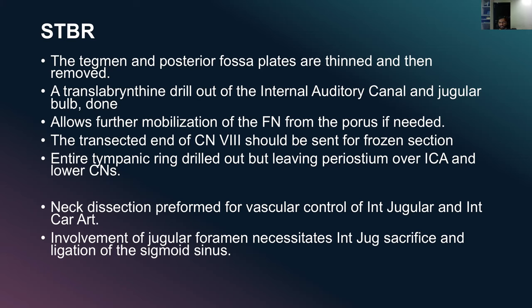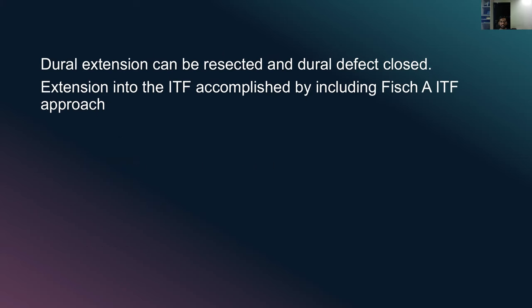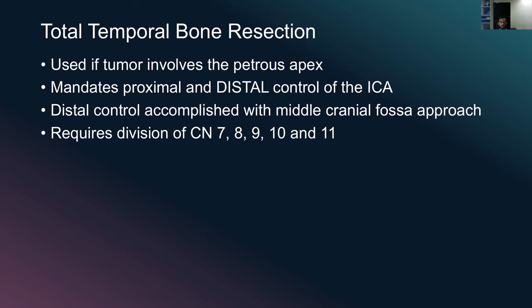Dural extension can be resected and the dural defect closed; extension into the infratemporal fossa can be accomplished by including the Fish Type A infratemporal fossa approach. Total temporal bone resection is used if the tumor involves the petrous apex and mandates proximal and distal control of the ICA. Distal control is accomplished with a middle cranial fossa approach and requires division of cranial nerves 7, 8, 9, 10 and 11.